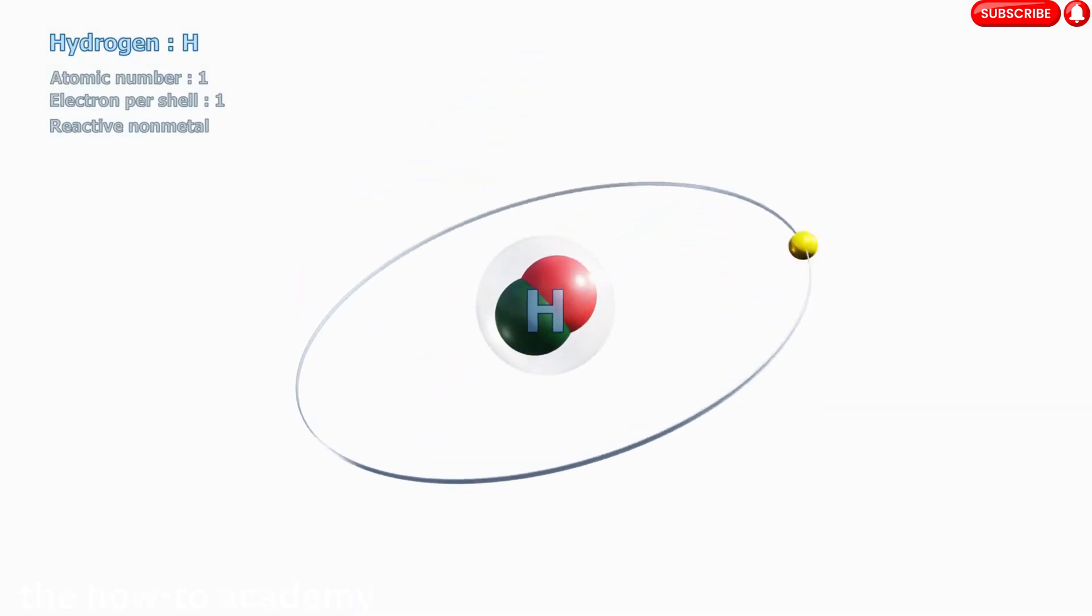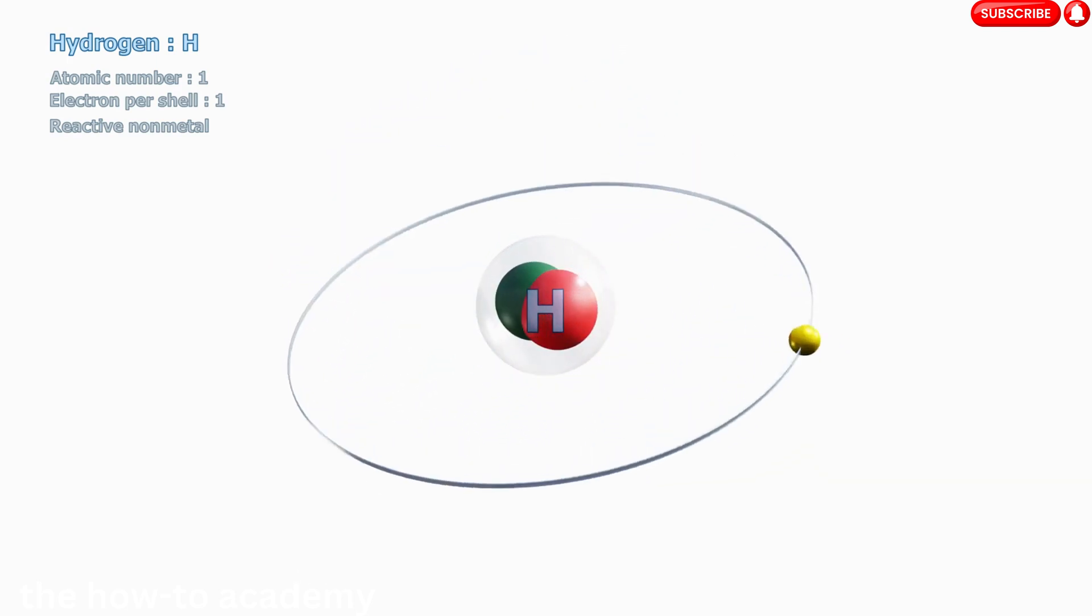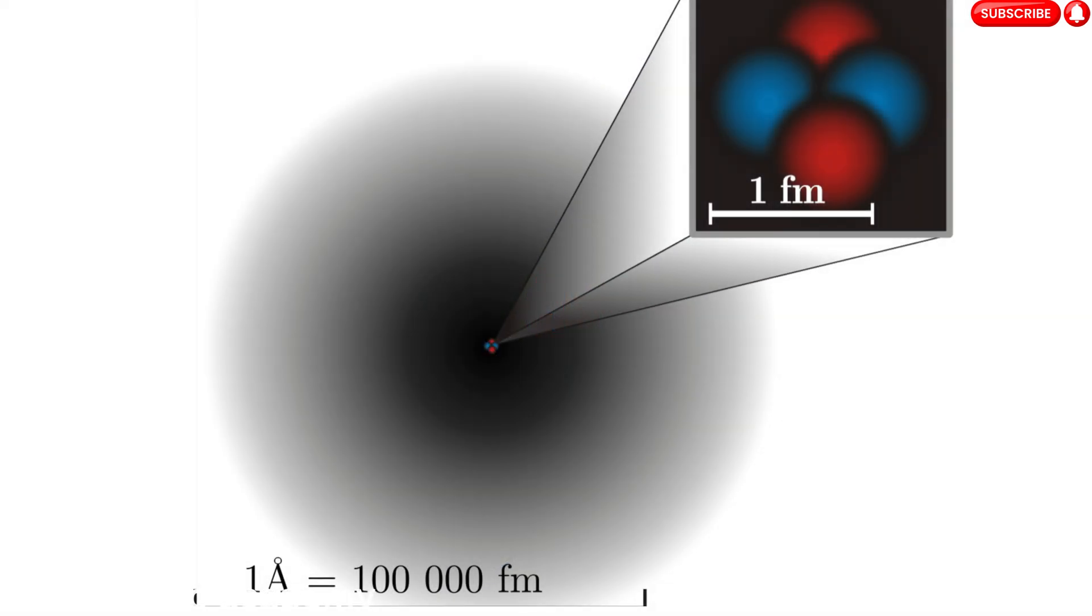Now, imagine for a moment that the atom is a stadium and the nucleus is a pea at the center. The electrons would be like tiny dust particles, constantly moving around the outer edges of the stadium. This is known as the electron cloud.